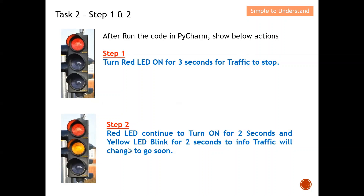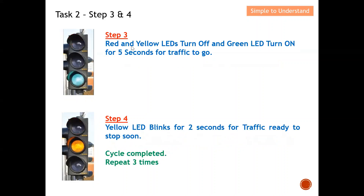For step two, the red LED will continue on for two seconds, and the yellow LED will blink for two seconds to inform traffic that the light will change to go soon. So after step two, the red LED turns on for two seconds then turns off, and the amber LED starts to blink for two seconds then goes off as well.